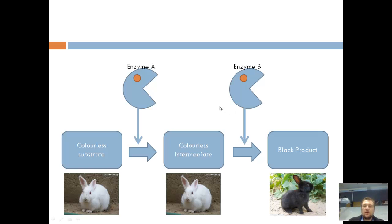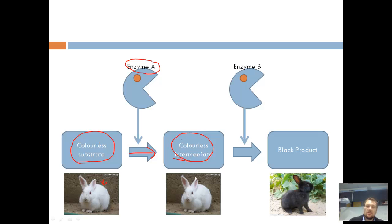Here we have a simple linear version of a metabolic pathway. We have a colorless substrate — that's our starting chemical — and if only that chemical is present, then the organism will end up being white. The first step is controlled by enzyme A, which converts this colorless substrate into an intermediate chemical that is also white. The last step is controlled by enzyme B, whose job is to convert that intermediate into the final product, which results in the black pigmentation of a rabbit. So if the metabolic pathway is completed, the phenotype of the organism will be black.